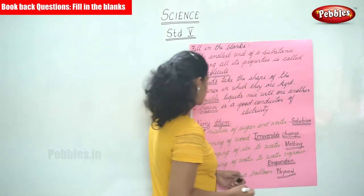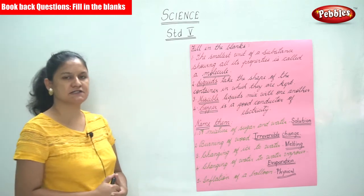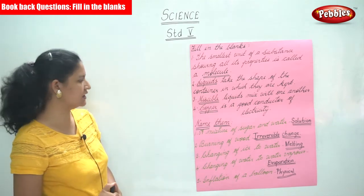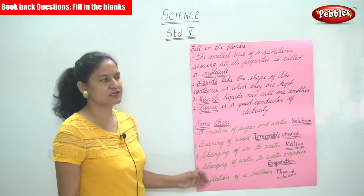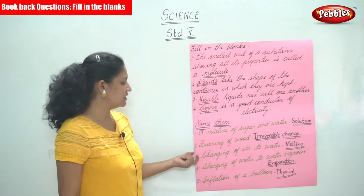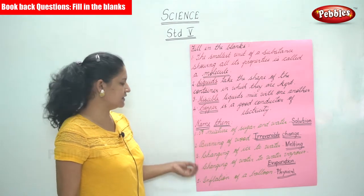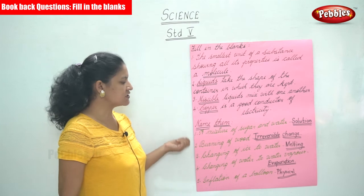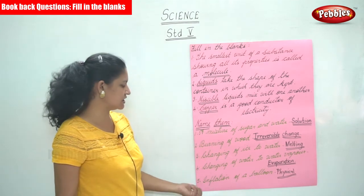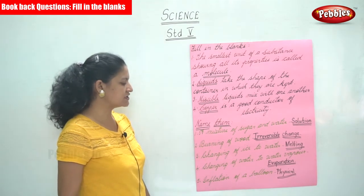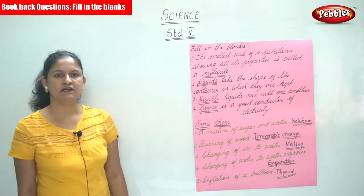So the answers are: a mixture of sugar and water is a solution. Burning of wood is an irreversible change. Changing of ice to water is melting. Changing of water to water vapour is evaporation. And inflation of a balloon is a physical change.